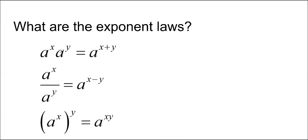What are the exponent rules? Well, we know that a to the x times a to the y is equal to a to the x plus y. That's called the product rule because we're multiplying together. A to the x over a to the y is equal to a to the x minus y. That's called the quotient rule. And a to the x to the y is equal to a to the xy. That's called the power rule.